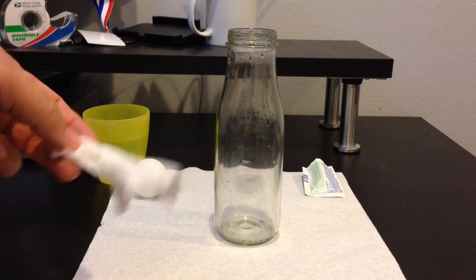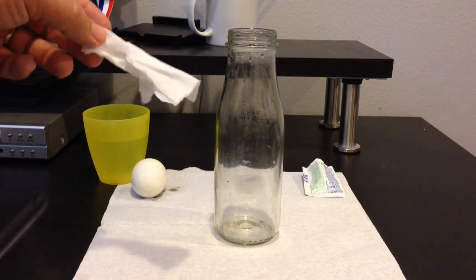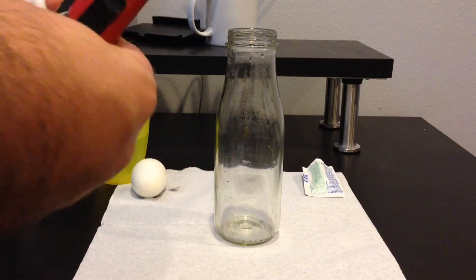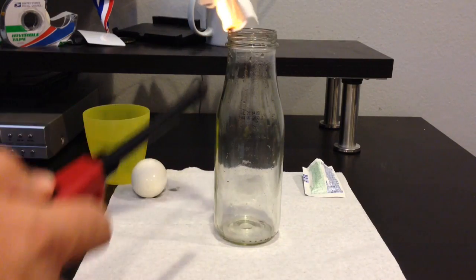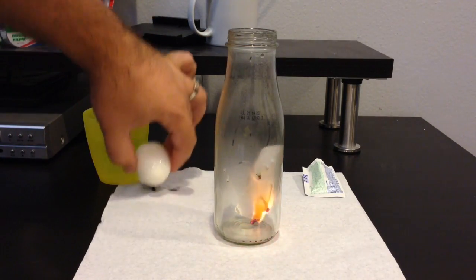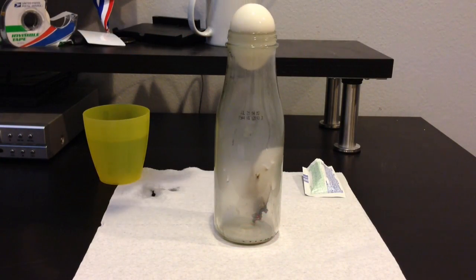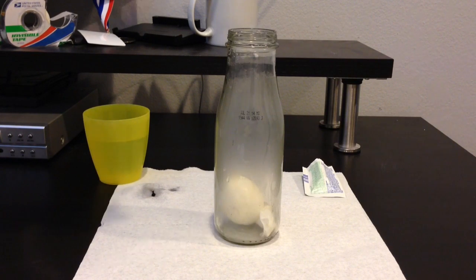What you want to do is make sure your parents are with you. You want to light a piece of paper, and then you want to put it down in there so it can burn while it's in there. Then you want to take the egg right away and bingo.